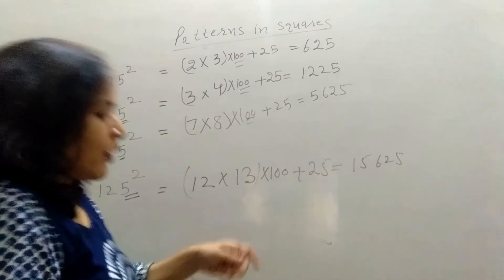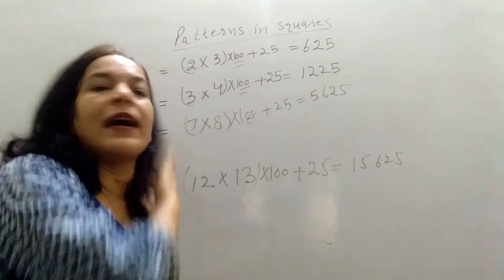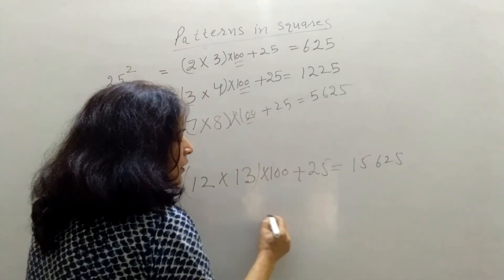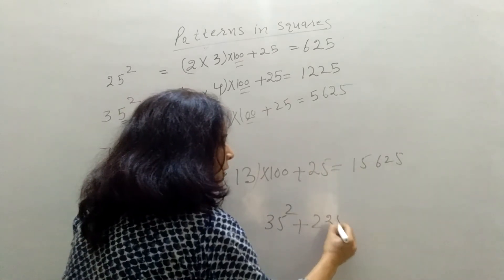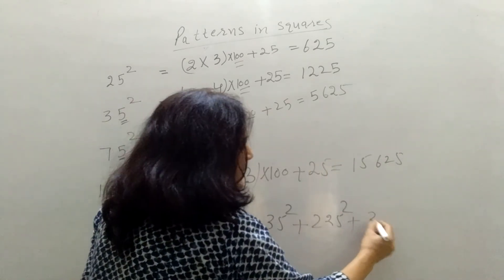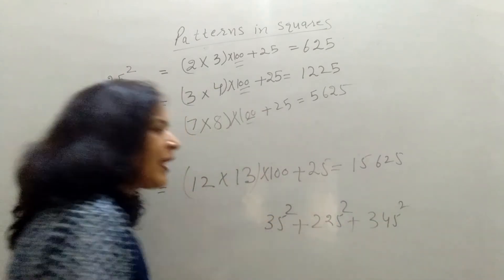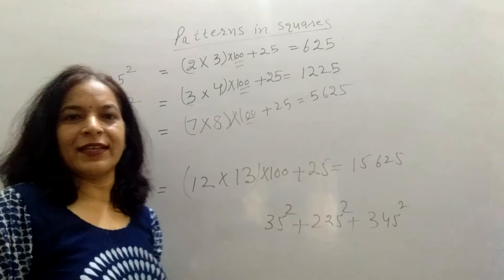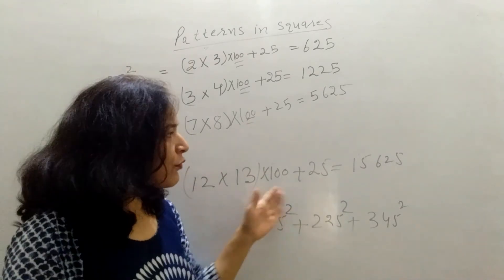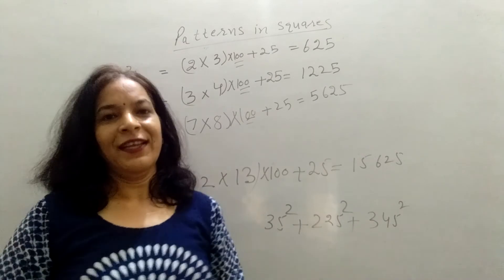So in this way you can do the longer calculation sometimes in your objective exam. If your formula comes like 35 square or 225 square or 355 square, then you can find it easily by doing this trick. So I'll give you some questions in assignments. Try this trick. Okay? Thank you.